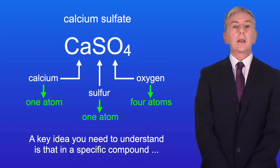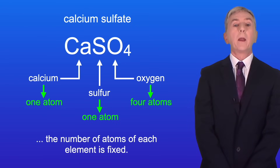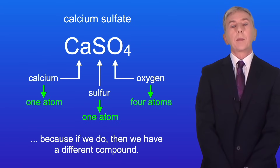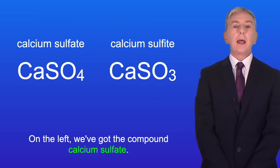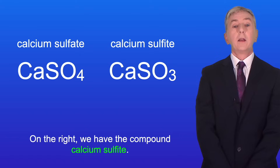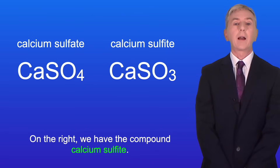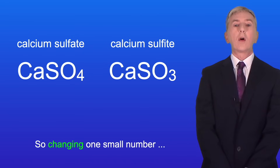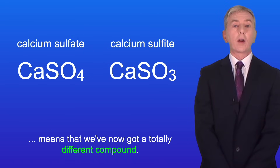A key idea you need to understand is that in a specific compound the number of atoms of each element is fixed. We can't change those numbers because if we do then we have a different compound. On the left we've got the compound calcium sulfate and on the right we have the compound calcium sulfite. So changing one small number means that we've now got a totally different compound.